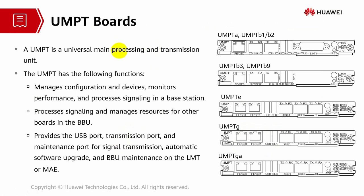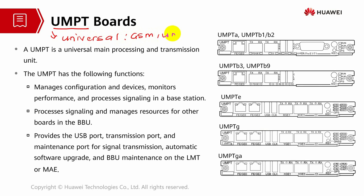Let's go through the first board: the Universal Main Processing and Transmission Unit, or UMPT. 'Universal' means it can support all kinds of technology — for example, GSM, UMTS, LTE, NB-IoT, and NR. So basically, it is a multimode base station board.